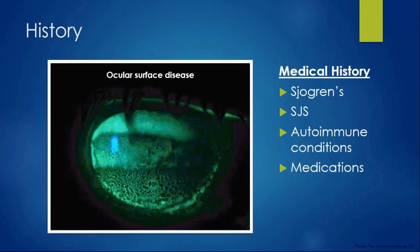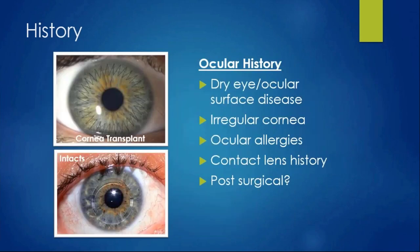Dive into medical history—what other conditions do they have besides their ocular condition, whether it be Stevens-Johnson syndrome, Sjögren's, or autoimmune disease—and review medications since so many affect the ocular surface. For ocular history: do they have dry eye, what treatments have they used, any ocular surface diseases, irregular corneas including pellucid or keratoconus, allergies, and full contact lens history. Also ask whether they've had surgery—intacs, RK, corneal transplant—and how long ago with any complications.